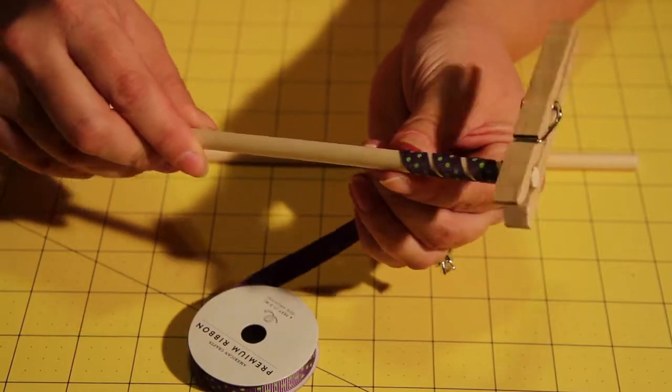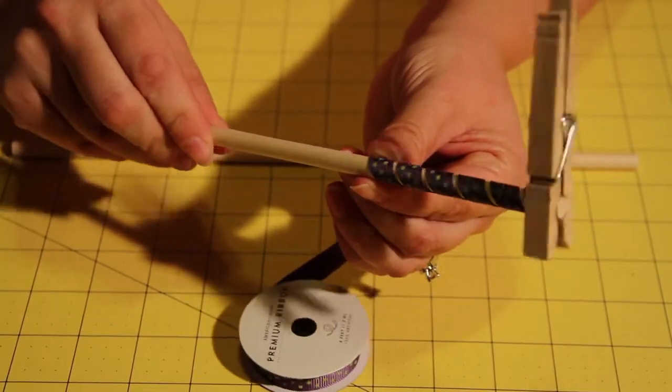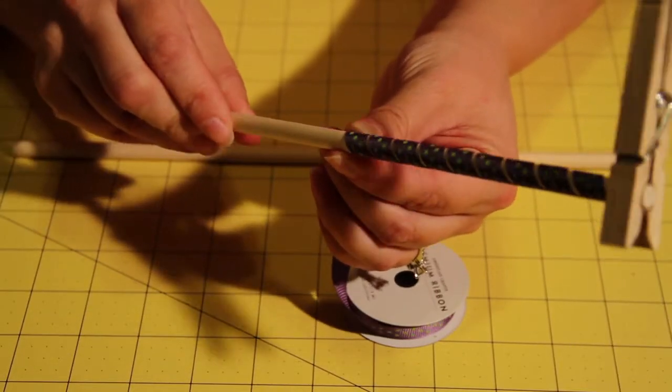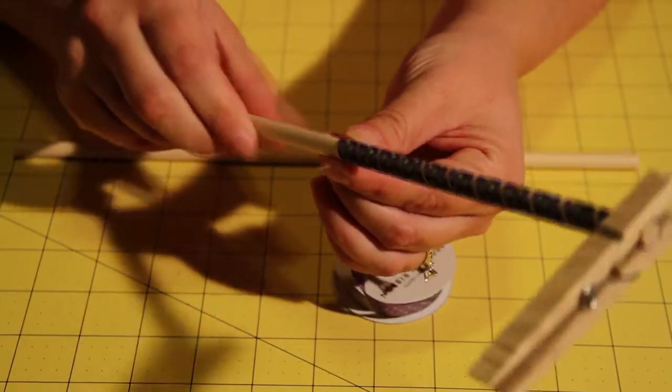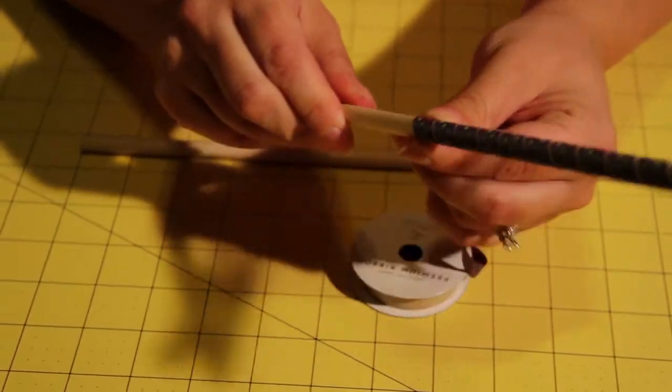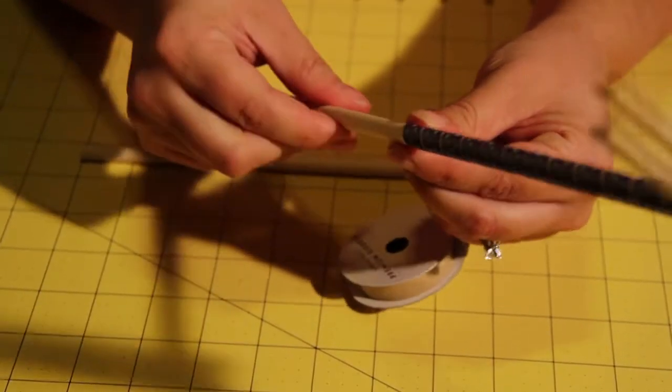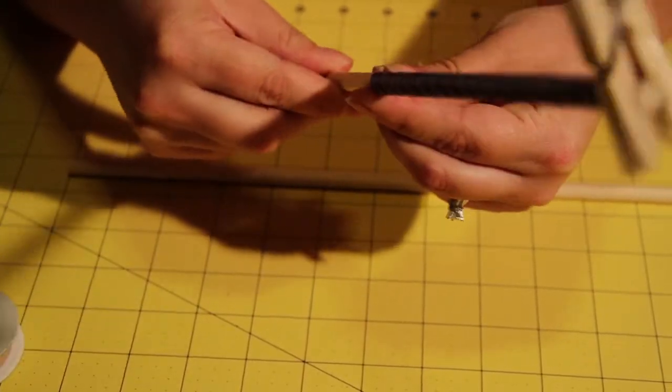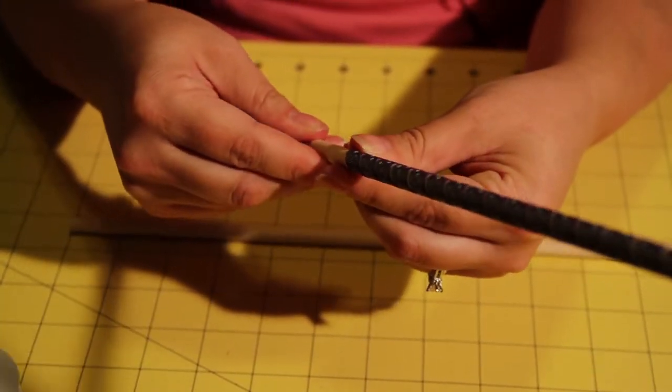So you are just going to do that all the way down to the end of the dowel. You can do it as close as you want as long as it is not touching or as far apart as you want. The closer you can get it together the tighter the curl will be. So I like to try and do mine closer.